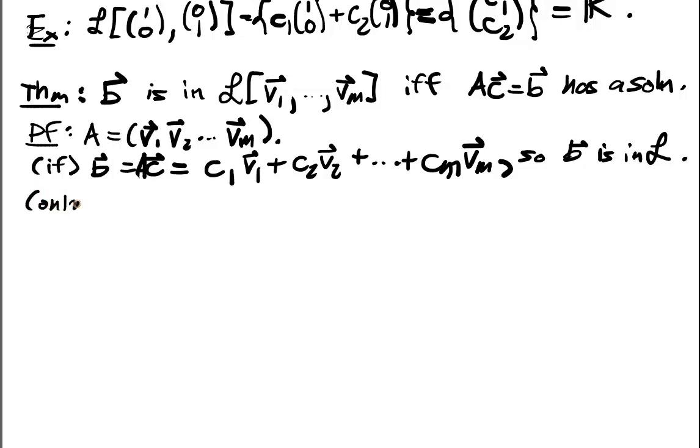So that covers the if case, only if. So the only if case, well let's suppose B is in here. Well if B is in here, then B is equal to C1 V1 plus C2 V2 plus Cm Vm.